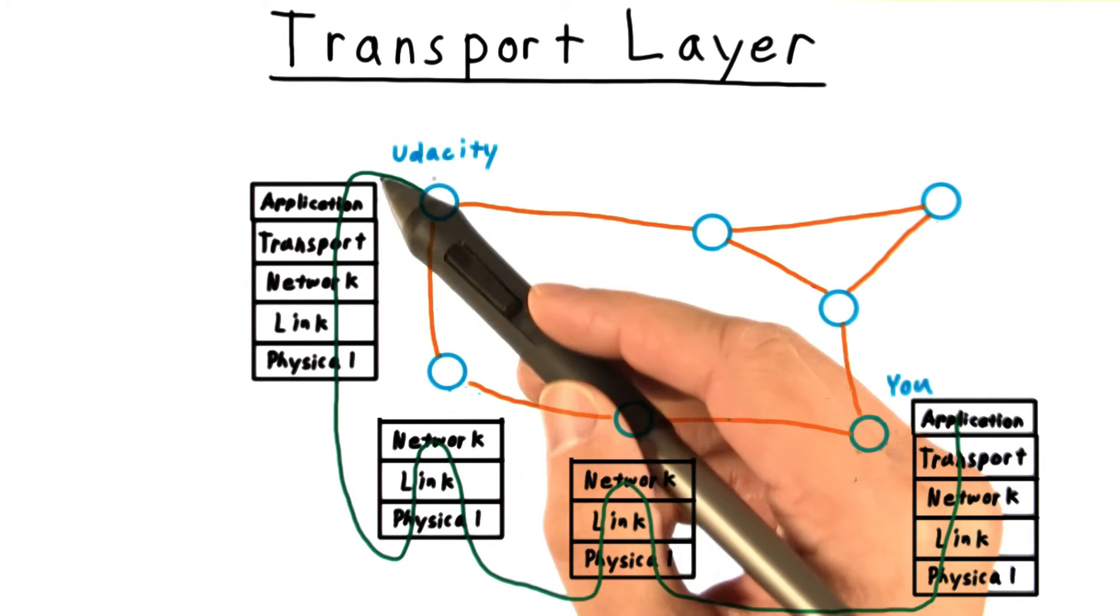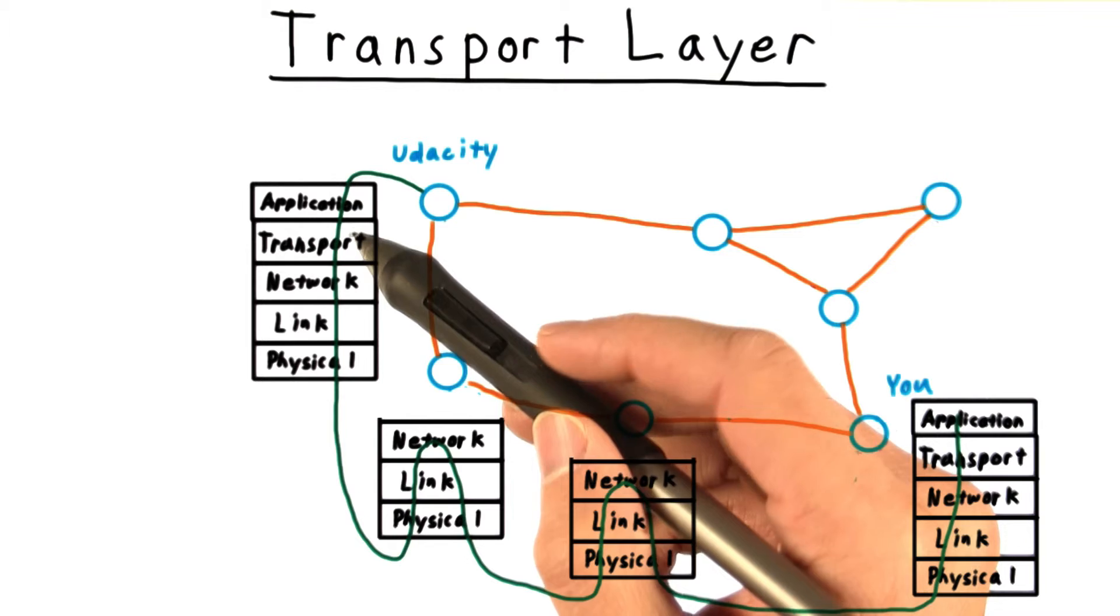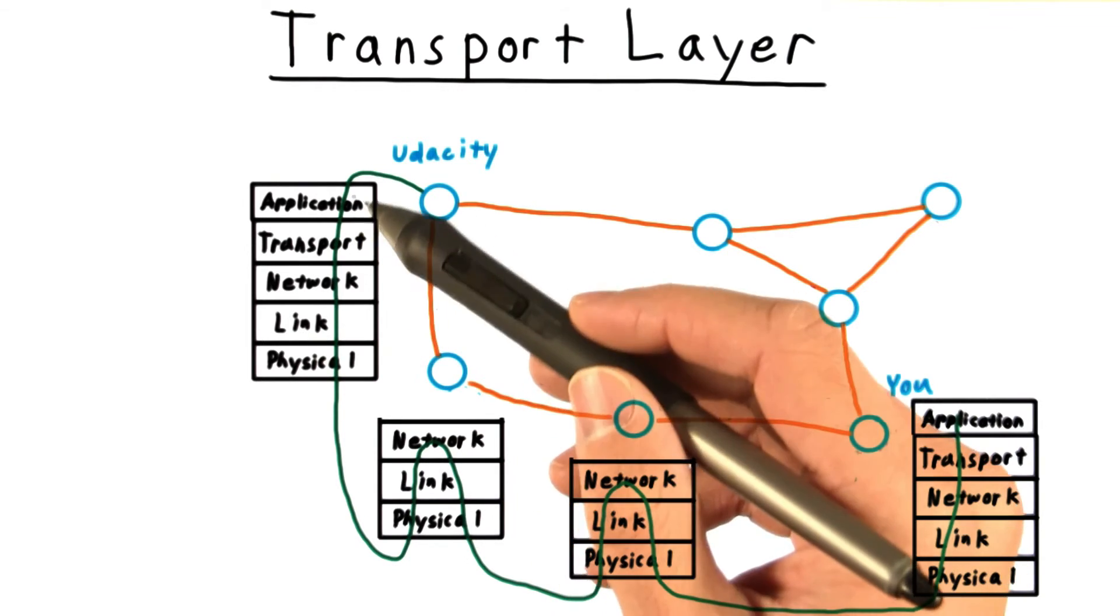Control starts at the application layer, moves through the transport layer, and the network layer, and the link layer, and the physical layer at the first node.